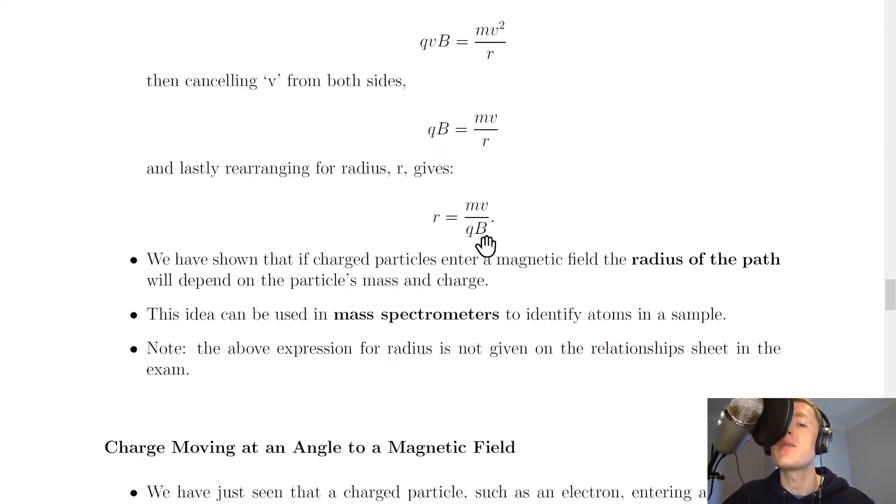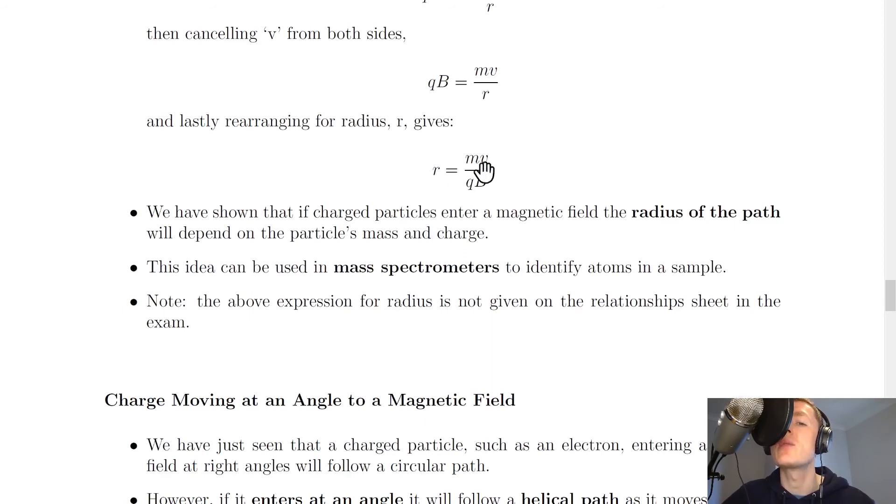And lastly, we can rearrange this to find the radius r. So we get this expression r equals mv over qB.